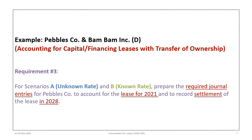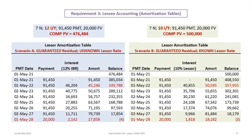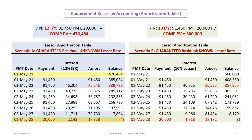Proceeding to requirement three: under both scenarios A and B we need to prepare the required journal entries for Pebbles to account for the lease in 2021 and record the settlement of the lease in 2028. Using a 12% interest rate where the lessor rate is unknown — 7N, $91,450 payments, $20,000 FV — the present value is $476,484. Where the lessee knows the lessor rate, 10% is used and the PV works out to $500,000. The amortization tables start at $476,484 and $500,000 respectively, both ending at essentially zero.